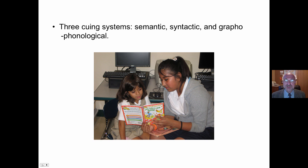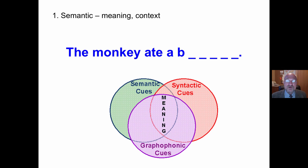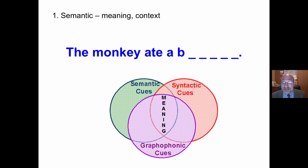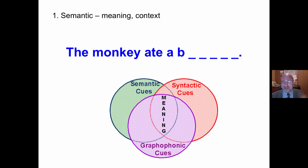Here are the three cueing systems: semantic, syntactic, and graphophonological. Semantic is context — meaning, 'the monkey ate a...' Most of us would predict 'banana.' We are using the context of what is around it to predict words as we are reading. This is what most efficient readers do, and it is the most efficient and economical way to recognize words — it takes up very little space in working memory.